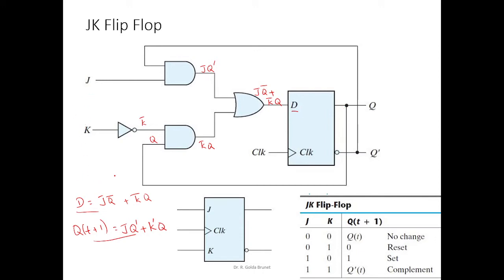When J and K are both equal to 0, substituting into the input equation: J=0 makes the first term 0, and K=0 makes K̄=1, so the second term is 1·Q = Q. We supply Q at time T, and therefore at time T+1 we observe Q — the state is retained. This is the no-change state.